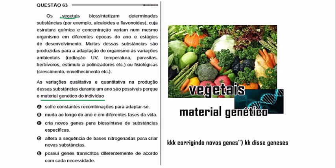The correct answer is E: possesses genes — yes, it already possesses them. Look at the difference from the other options. These types of plants already possess genes that are transcribed differently according to each need. That's what makes this answer so remarkable and peculiar.